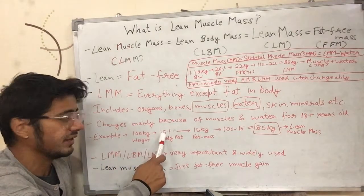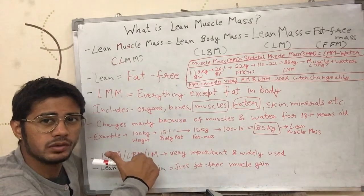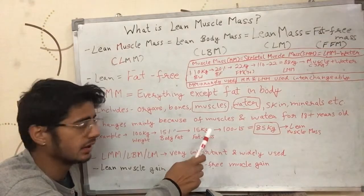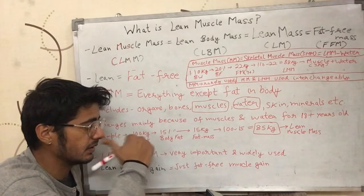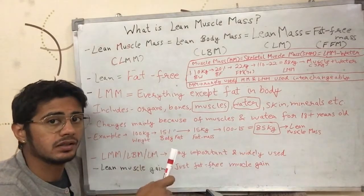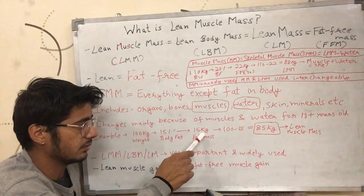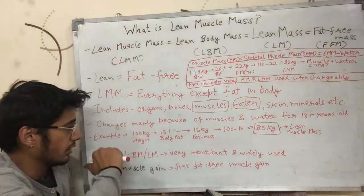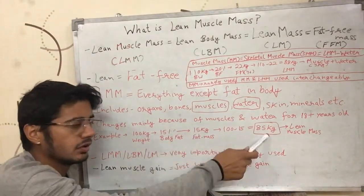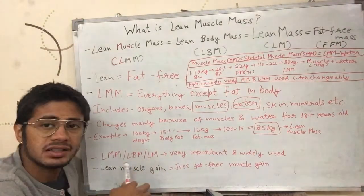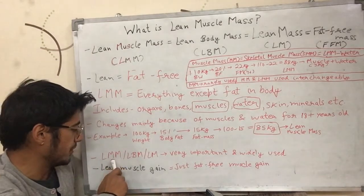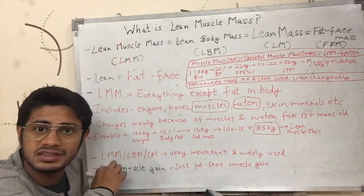Take a 100 kg guy with 15 percent body fat — that means 15 kilograms of fat mass. We subtract this fat mass from the total body weight, which gives us 85 kg of lean muscle mass. These terms — lean muscle mass, lean body mass, lean mass — are very important and used a lot in the fitness industry, and they all mean the same thing.